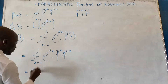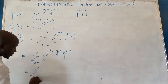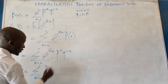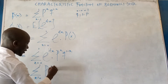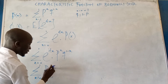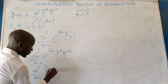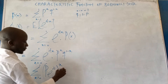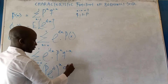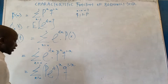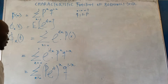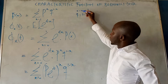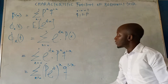So we are going to have summation X from 0 to 1 of P·e^(it) raised to power X, times Q raised to power 1 minus X. We should not forget that X can only take the value of 0 or 1; it cannot be more than 1.